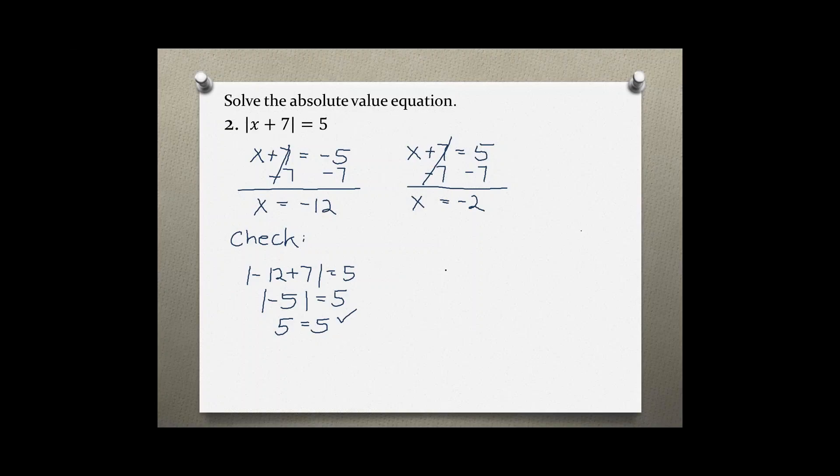Now checking our solution for the right side, we're plugging in negative 2 for x into the original absolute value equation. Negative 2 plus 7 is a positive 5, and the absolute value of positive 5 is still a positive 5, so 5 equals 5 is also a correct solution. Our final answer for this problem is negative 12 and negative 2 are both solutions to this absolute value equation.